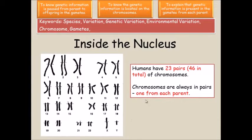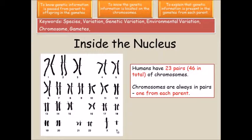The only one that's an exception to this is the 23rd chromosome, which is the sex chromosome. It comes in the form X or Y. On the 23rd chromosome, if you're a female, you'll have XX, and if you're a male, you'll have XY.